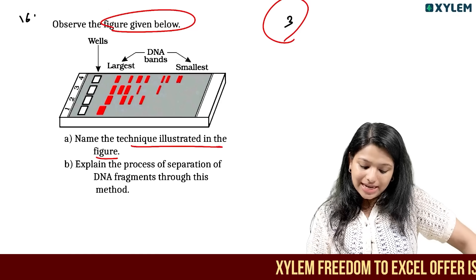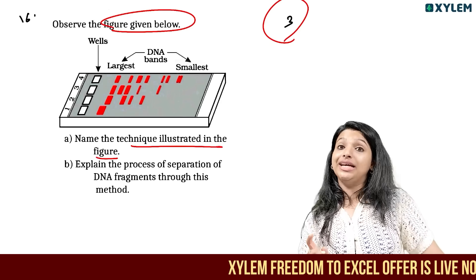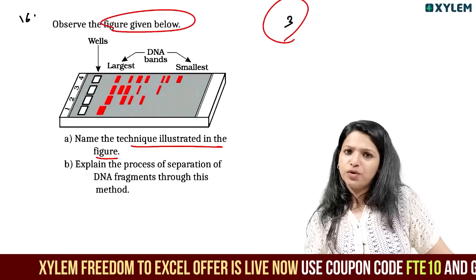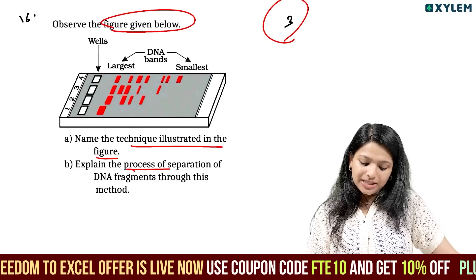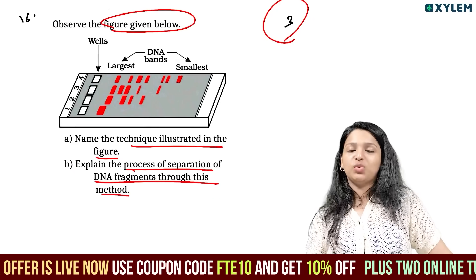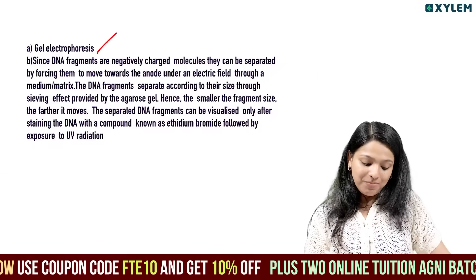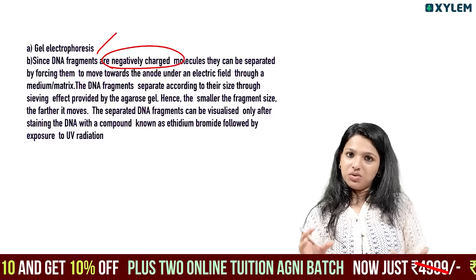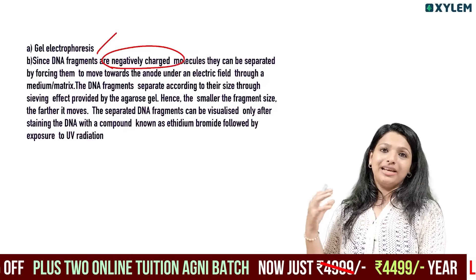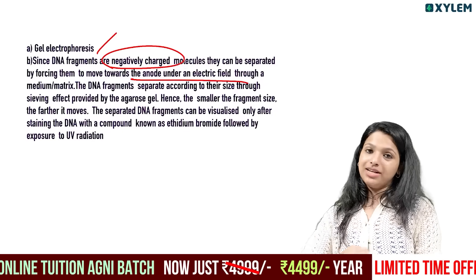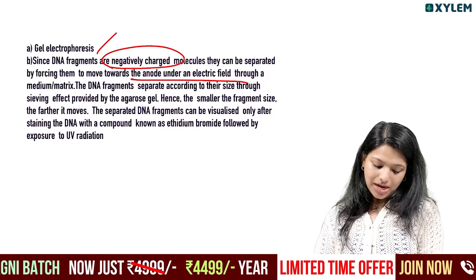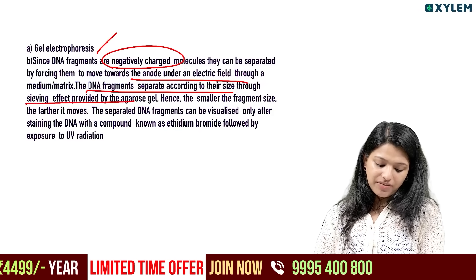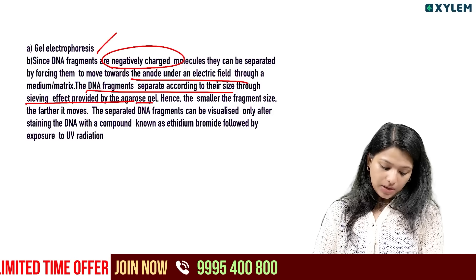Name the technique and illustrate the figure — it is gel electrophoresis, specifically agarose gel electrophoresis. Explain the process of separation of DNA fragments through this method. DNA is a negatively charged molecule, so it moves toward the positive charge in the electric field. DNA fragments separate according to size through the sieving effect provided by agarose gel.